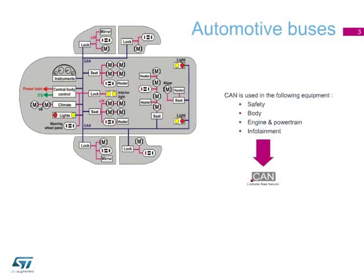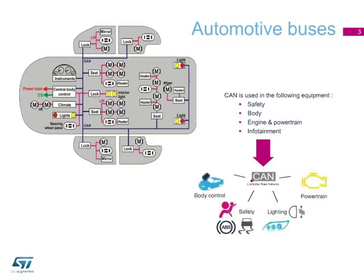One of these buses is the Controller Area Network, CAN, bus, mainly used for safety equipment, while the LIN bus is more suited to comfort equipment. The CAN bus is used in chassis and safety as well as engine and powertrain subsystems, where reliable functionality is imperative. So effective protection from ESD and EOS is not an option.